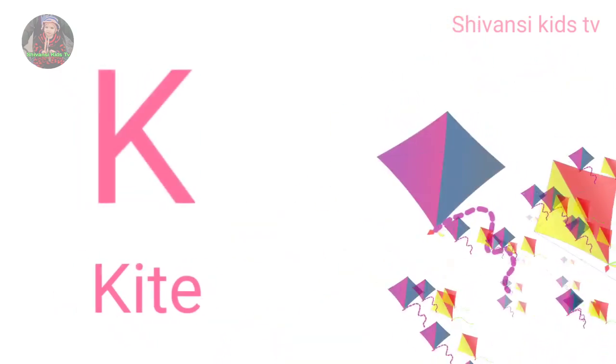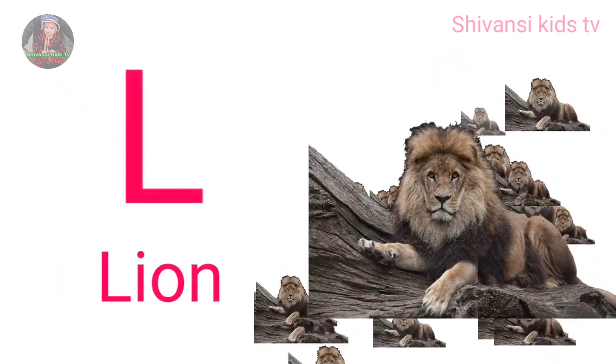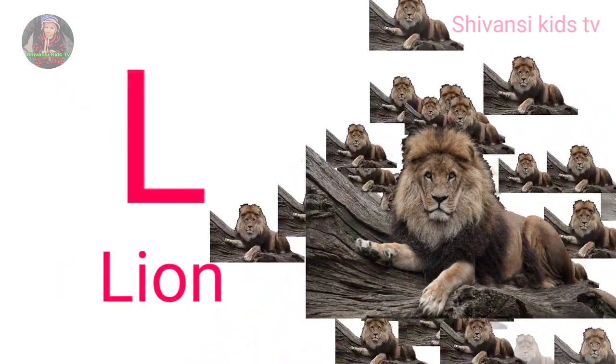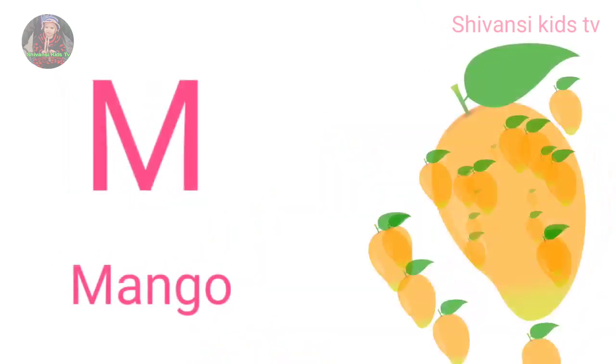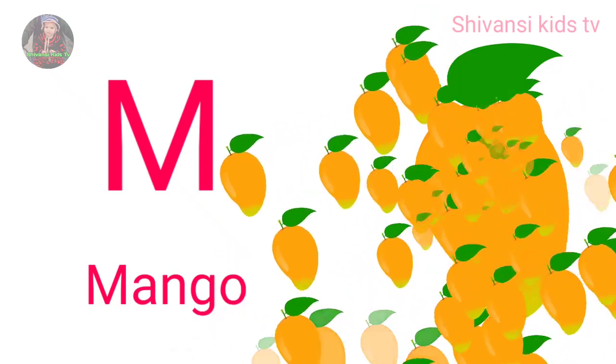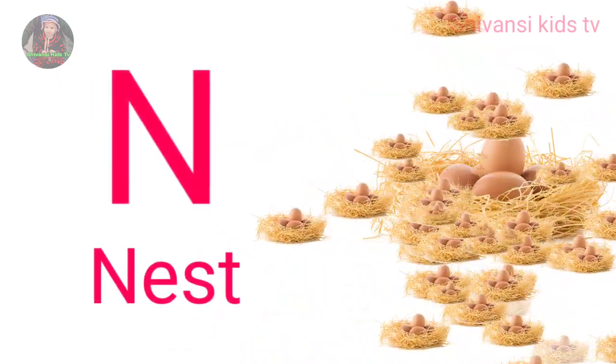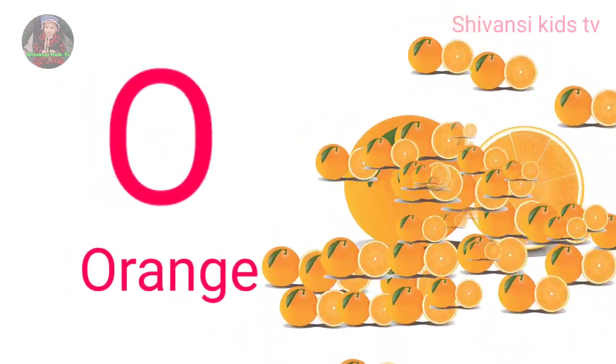K for kite, L for lion, N for mango, N for nest, O for orange.